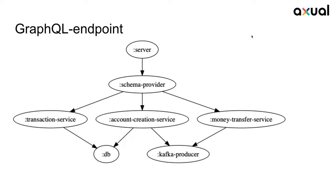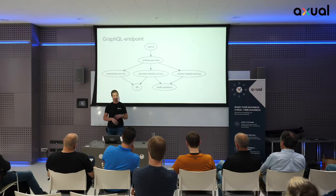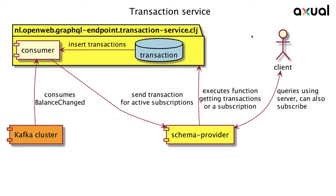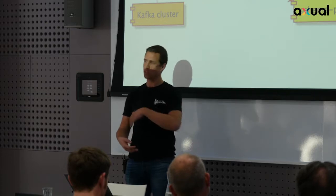The GraphQL endpoint is the most complicated part, offering different subscriptions to the frontend to handle data and trigger produce events. The transaction server keeps track of all balance changes, and you can make subscriptions — for example, asking the transaction service to give you all transactions above 500 euros — and when it reads from Kafka via WebSocket, it pushes to the client.